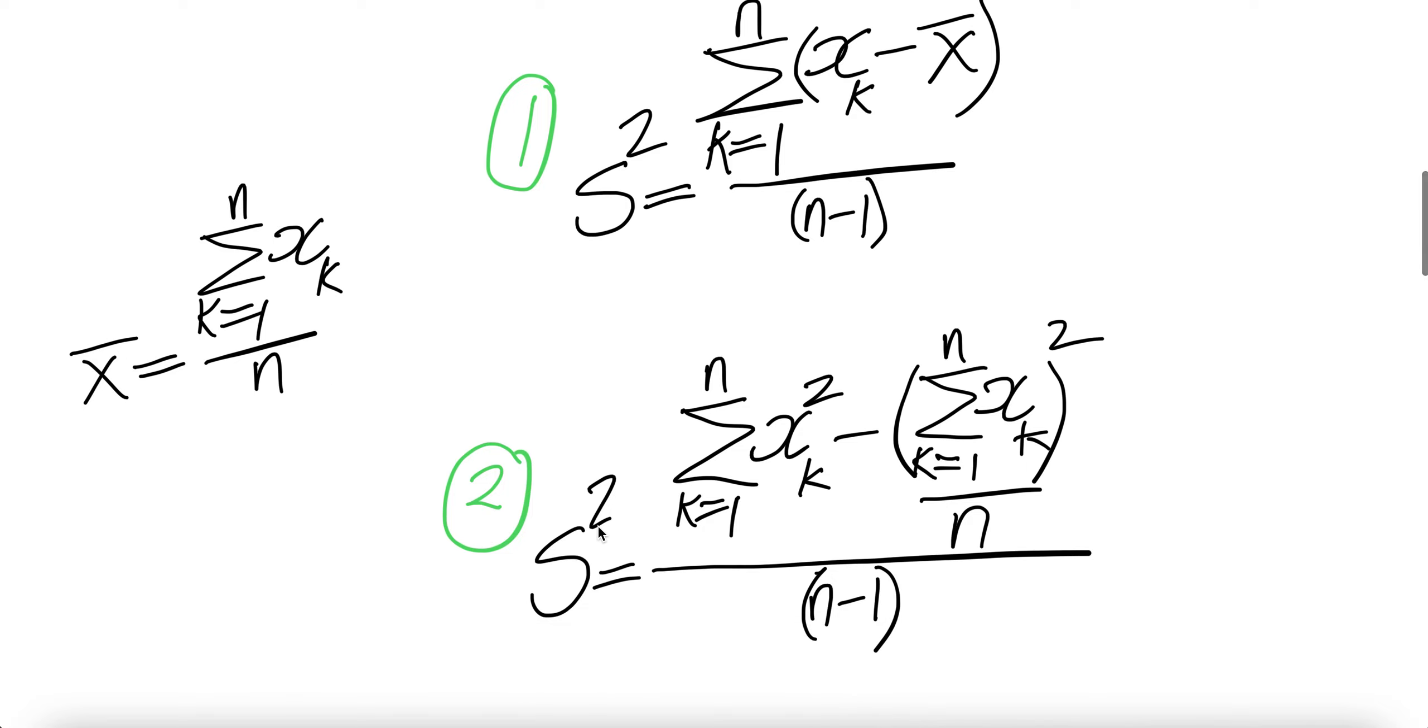Second form is s square equals summation xk, x subscript k square k go 1 to n minus summation xk k go 1 to n whole thing square divided by n divided by n minus 1.